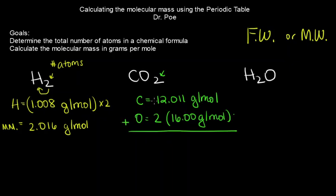We add up everything that's there. So 12.01 plus 32 is going to give us 44.011 grams per mole, and that is the molar mass of CO2.